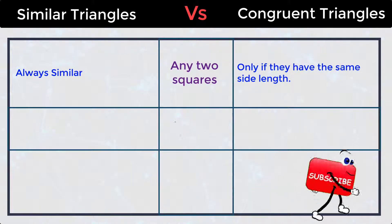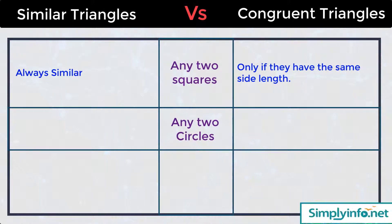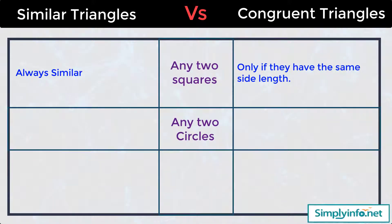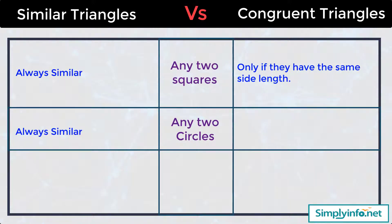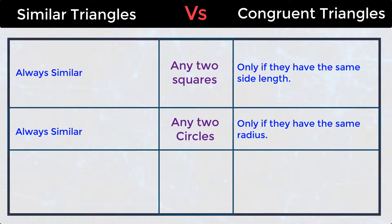Any two circles in similar triangles are always similar. Any two circles in congruent triangles are congruent only if they have the same radius.